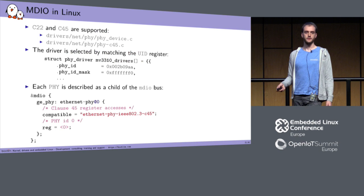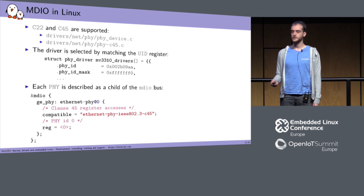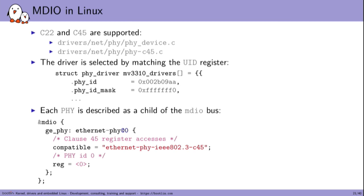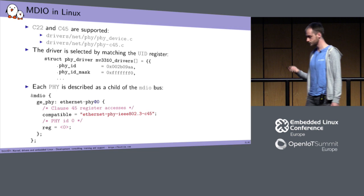In Linux, there are generic helpers in phy-device.c for Clause 22 and phy-c45 for Clause 45. Each PHY has a unique identifier based on its model number and vendor to select the correct driver. Each PHY is described as a node of the MDIO bus in the device tree, where you specify whether it speaks Clause 45 or Clause 22 and its address on the MDIO bus.